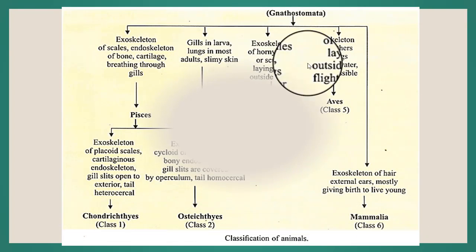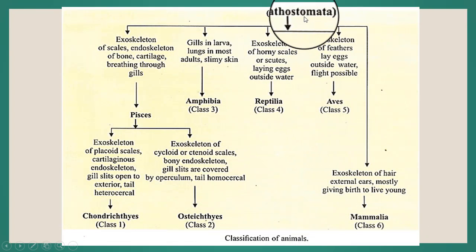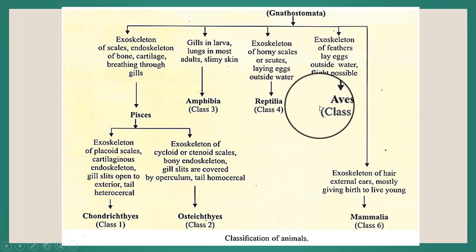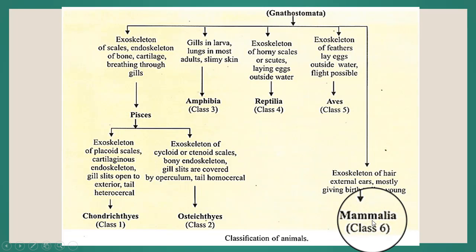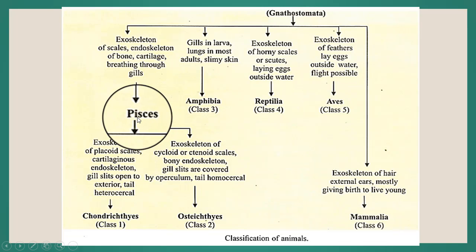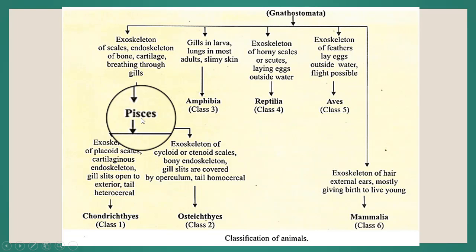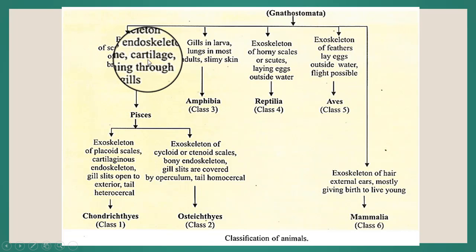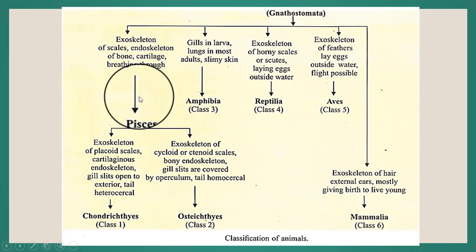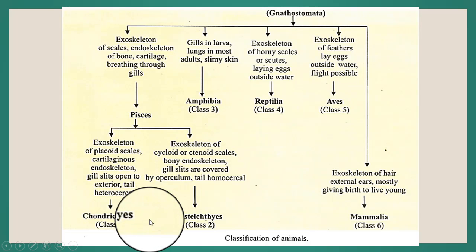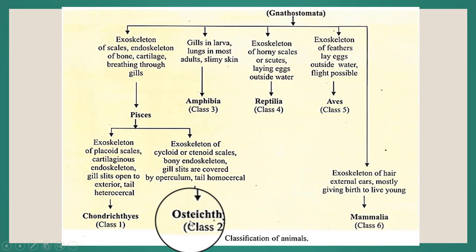Gnathostomata, Subphylum 2, is further divided into Pisces, Amphibia, Reptilia, Aves, and Mammalia. Pisces, the first subtype of Gnathostomata, has an exoskeleton of scales and an endoskeleton of bone and cartilage, and breathes through gills. Pisces are divided into two subclasses: Chondrichthyes, Class 1, and Osteichthyes, Class 2.